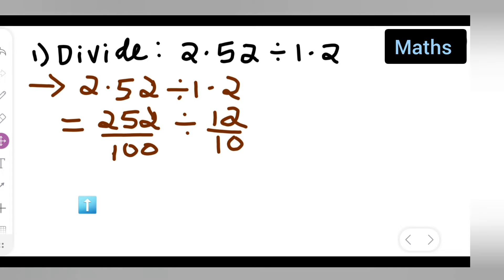So you'll have to write it as it is: 252 upon 100. Multiply this with the reciprocal of the other. So you'll have to multiply this term with the reciprocal of this. 10 upon 12 it will be.